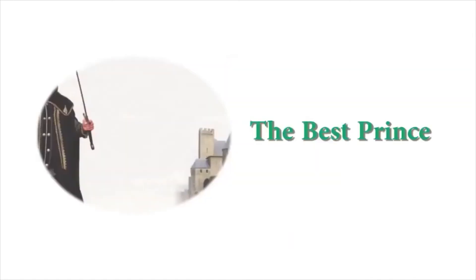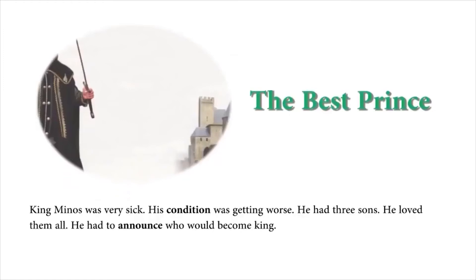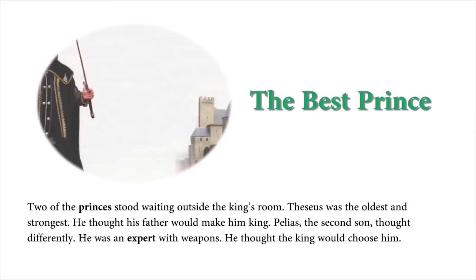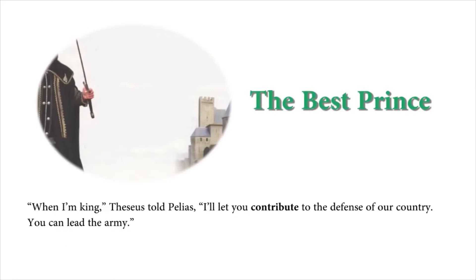The Best Prince. While Theseus was the first prince and Peleus was the second, he was an expert with weapons and thought the king would choose him. When I'm king, Theseus told Peleus, I'll let you contribute to the defense of our country. You can lead the army.